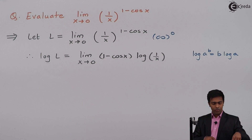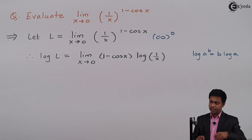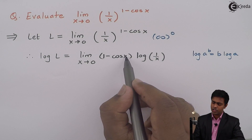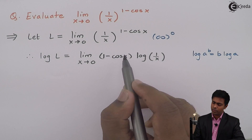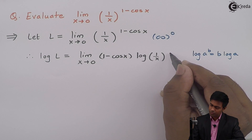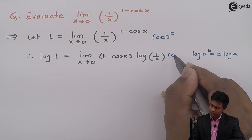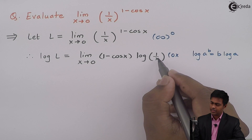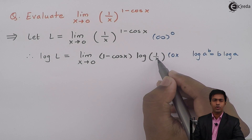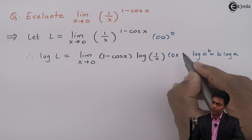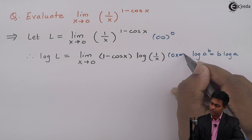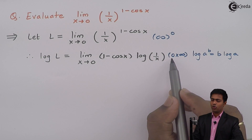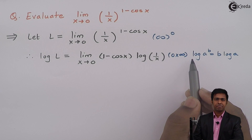Now if we check by substituting x as 0: cos(0) is 1, so 1 minus 1 gives 0 for the first factor. For the second, 1/0 is infinity and log of infinity is infinity. So we are getting the form 0 into infinity.